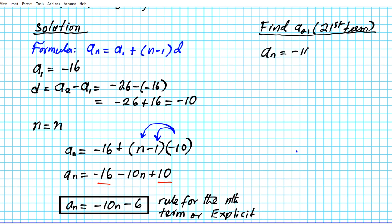To accomplish that, we're simply going to make use of our rule or explicit formula. So aₙ equals negative 10n minus 6. This formula helps us to determine an nth term based on the position of the term we desire to find. In this particular case, n is going to obtain the value of 21.